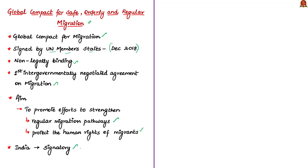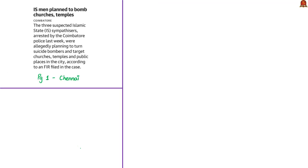With this, we come to the end of the analysis of this editorial. Let us move on to the next news article. This news article is about the prevention of a possible terrorist attack on Indian soil by the vigilance of personnel involved in internal security and intelligence.